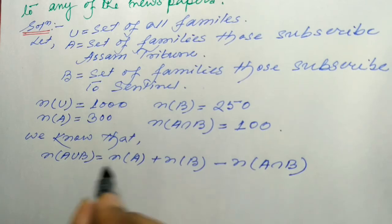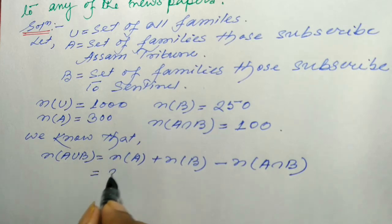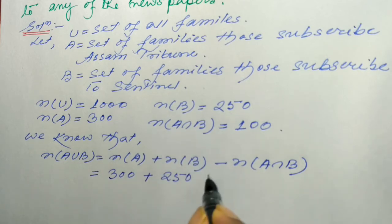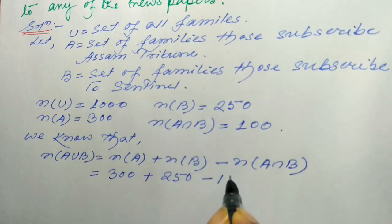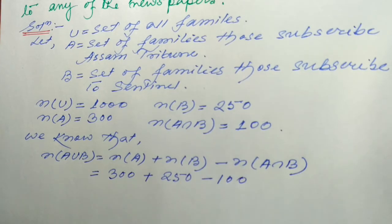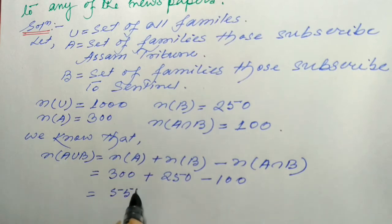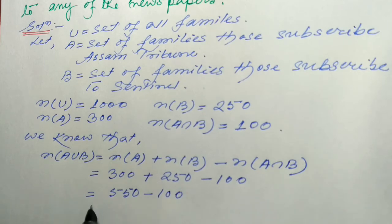Now putting in the values: n(A) = 300, n(B) = 250, and n(A ∩ B) = 100. So 300 plus 250 gives 550, minus 100 gives n(A ∪ B) = 450.